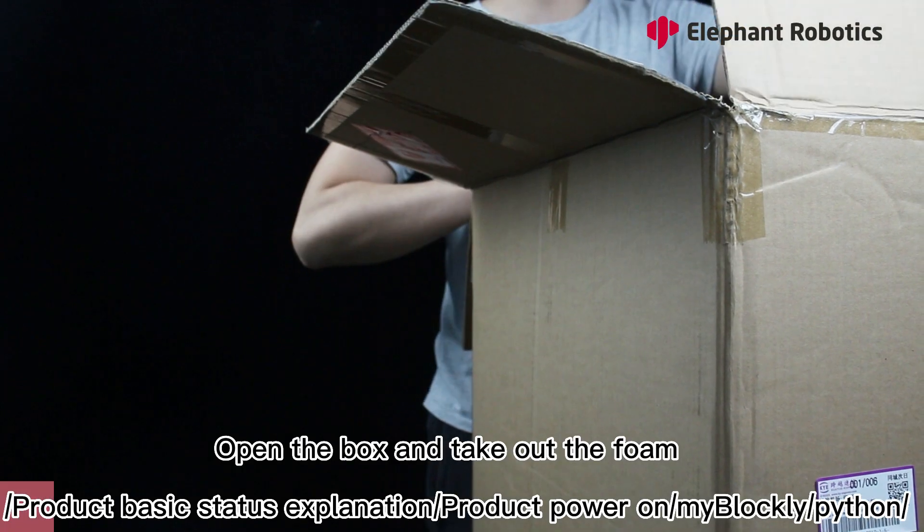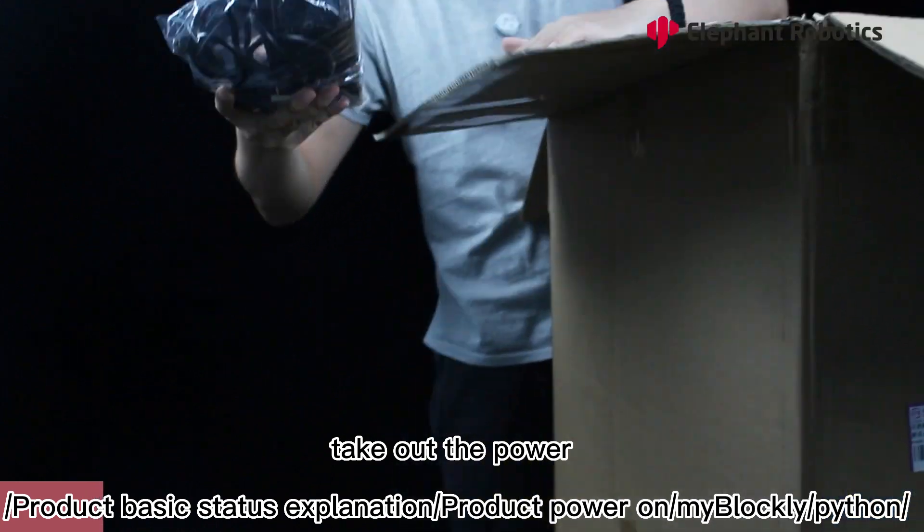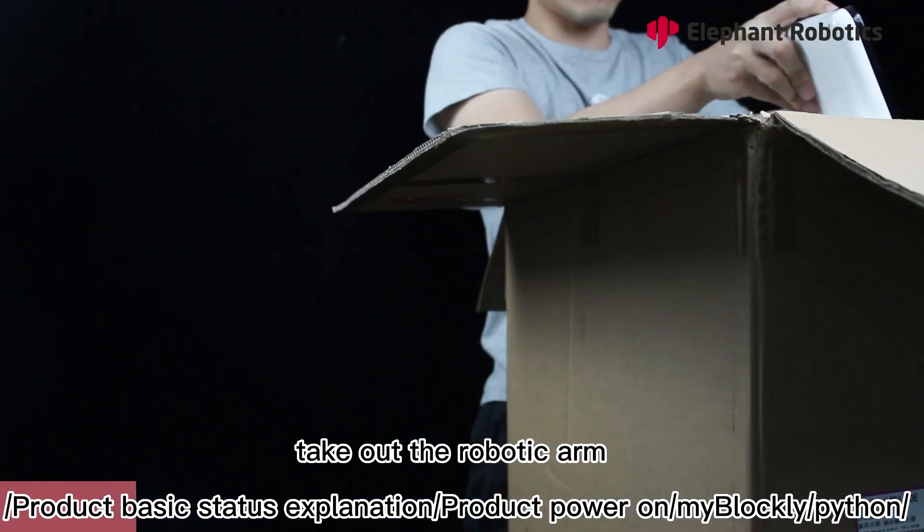Open the box and take out the phone. Take out the power. Take out the robotic arm.